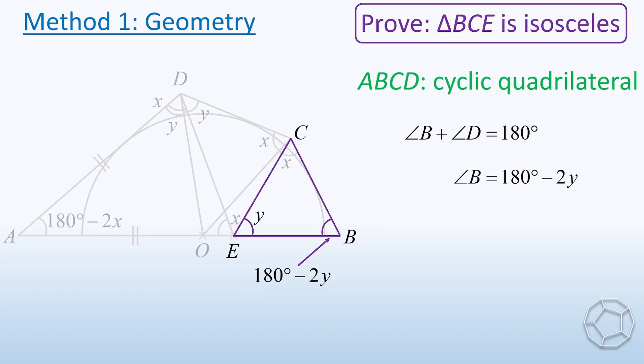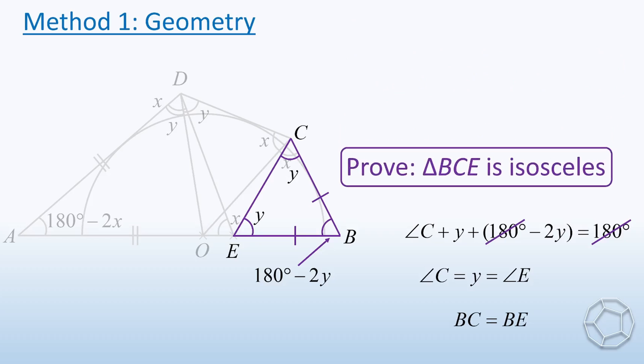Now, we arrive at the purple triangle. There's only one unknown angle C. Since the sum of angles in the triangle is 180 degrees, after crossing out the same term on both sides, we get angle C equals Y. More importantly, this is the same as angle E. Therefore, BC equals BE. This completes the proof by method 1.